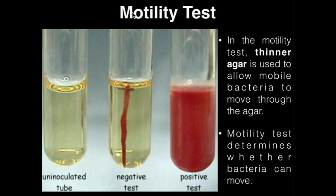So how do we do this? We're actually going to take an inoculating needle and stab a hole in the agar. In fact, you can see here in this negative test you can actually see the hole that was stabbed with the inoculating needle.